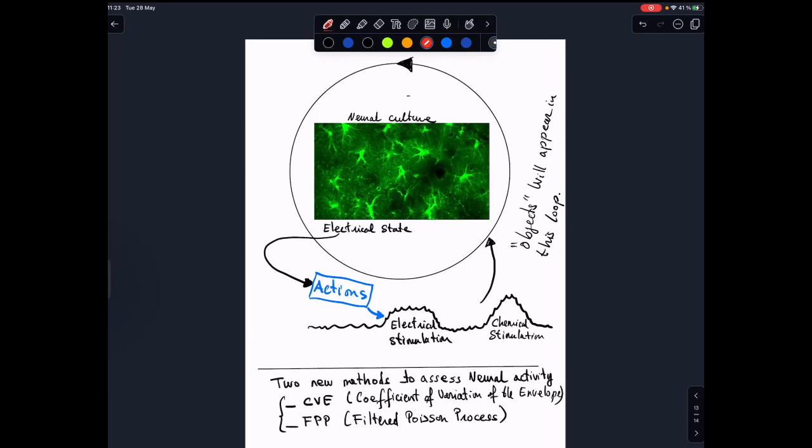And here I have developed two different new methods to assess neural activity. One is something that we call the coefficient of variation of the envelope that detects how much a neural signal is similar to Gaussian noise. And the other is that we use the framework of filtered Poisson process to interpret collective signals as not being created by the addition of sine waves but by the independent activation of pulses that generate the overall signal. Then we can in this way, I think, measure and quantify the electrical state of a neural culture in new dimensions.